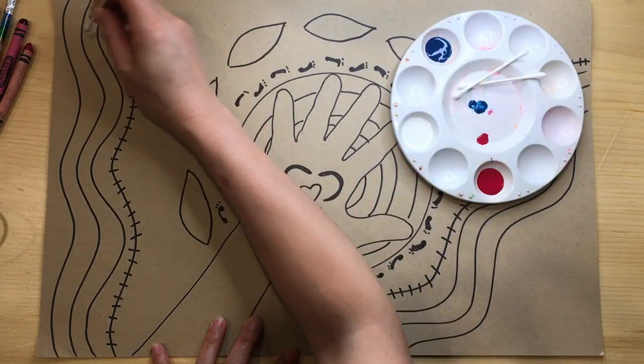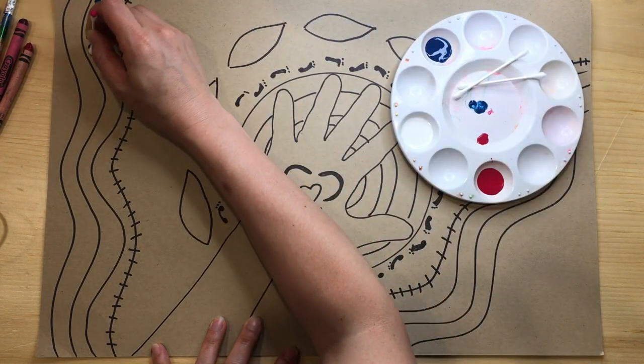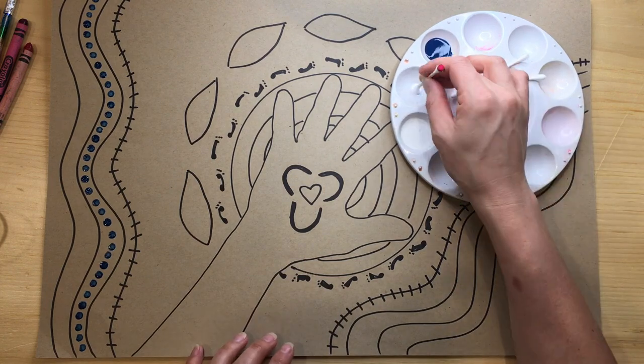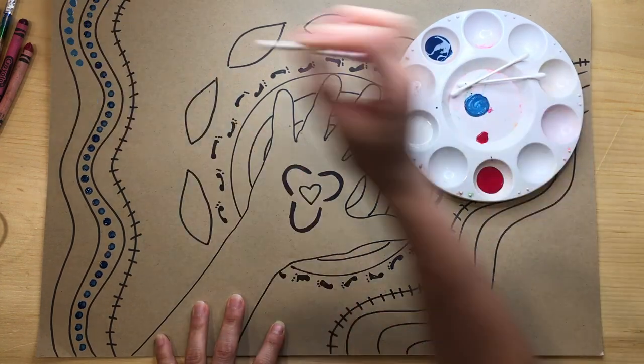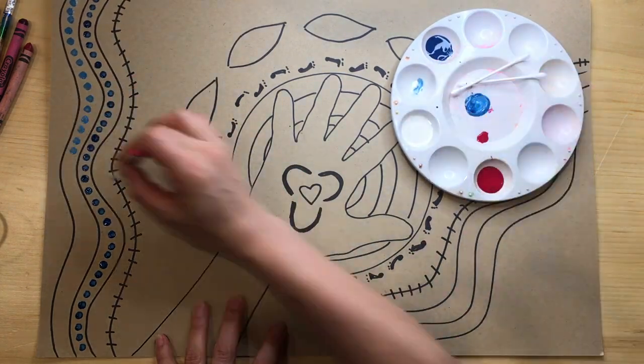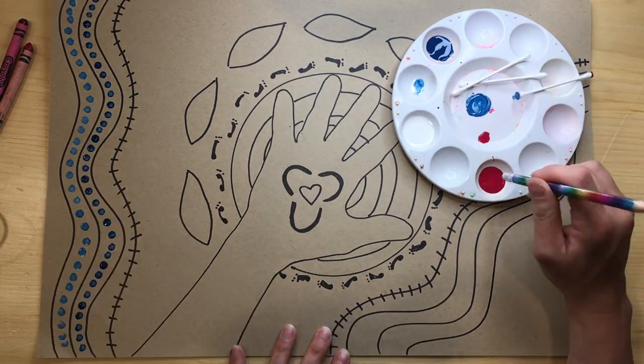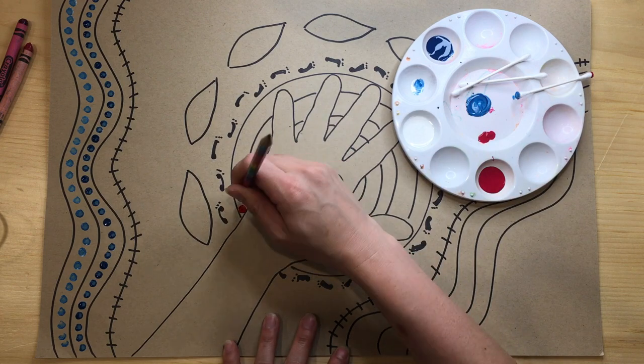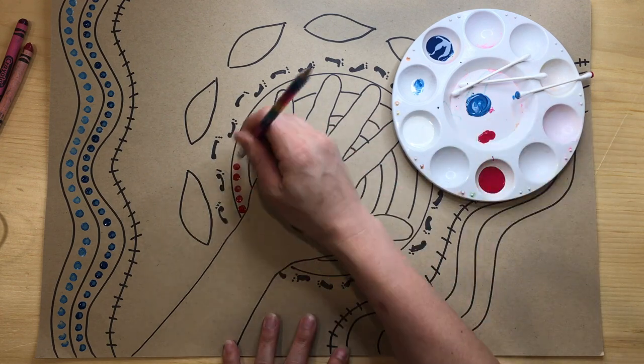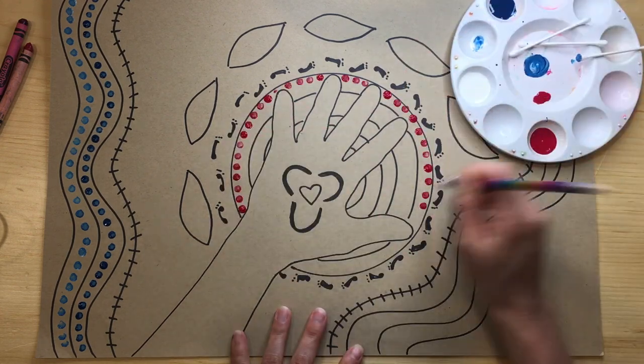Okay, now that I have my basic drawing outlined, I'm ready to add some dots. You can add dots in a lot of different ways. You can use paint if you have it, and use Q-tips, pencil erasers, or any other stick-like object to make your dots.